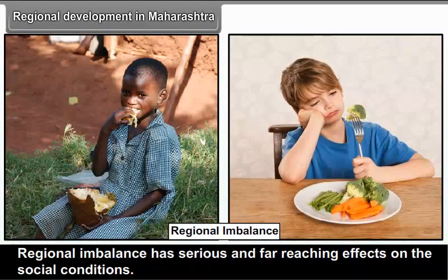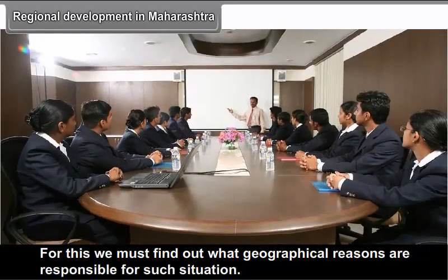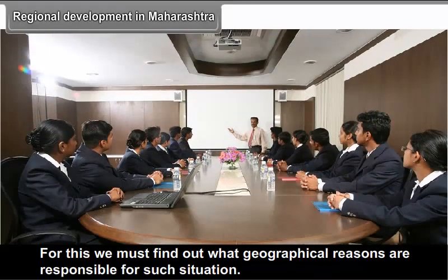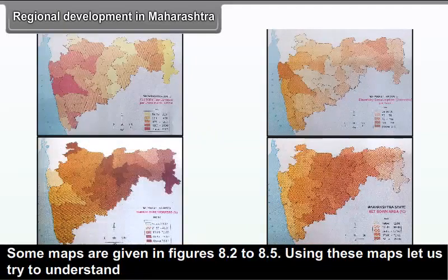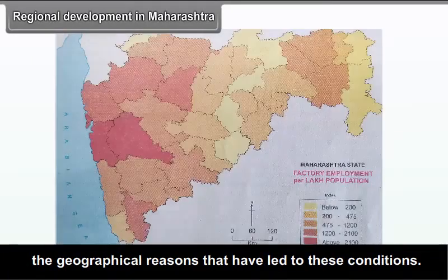The wide difference in HDI values points towards regional imbalance, indicating that development in the state is not all-inclusive. Regional imbalance has serious and far-reaching effects on social conditions. Hence, extra efforts need to be taken to reduce the imbalance. For this, we must find out what geographical reasons are responsible for such situations. Using maps in figures 8.2 to 8.5, let us try to understand the geographical reasons that have led to these conditions.